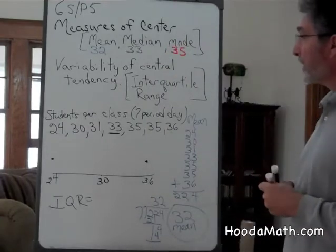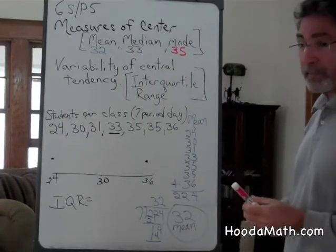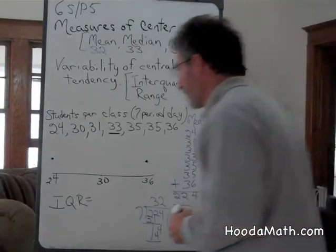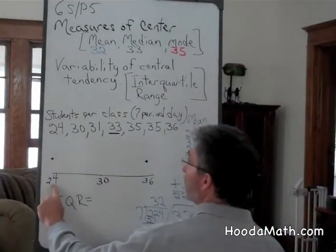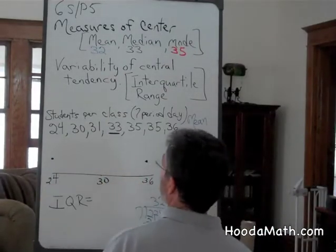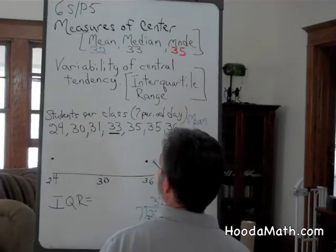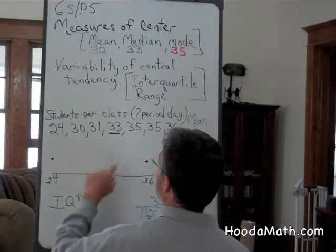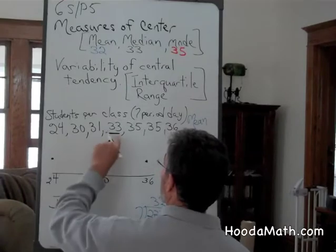To find the interquartile range, we have to make a box plot. We use the minimum, 24, and the maximum, 36. We use the median, the median being 33.